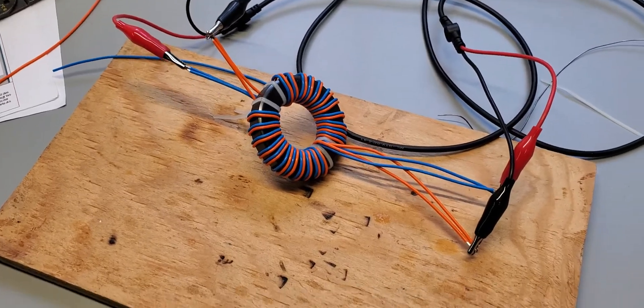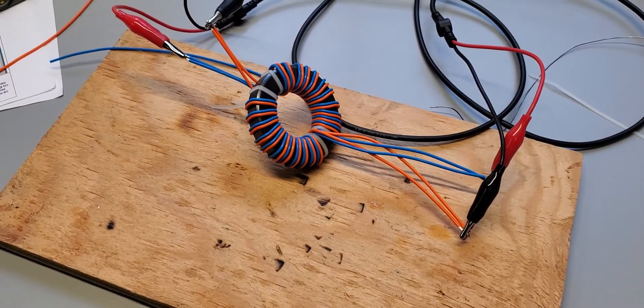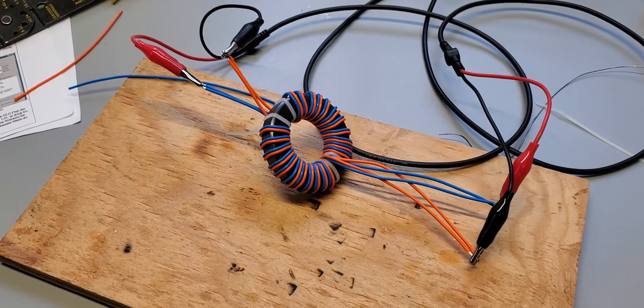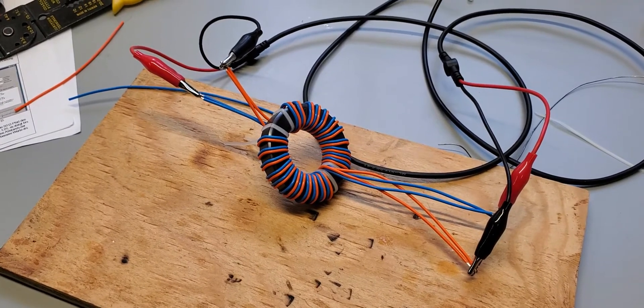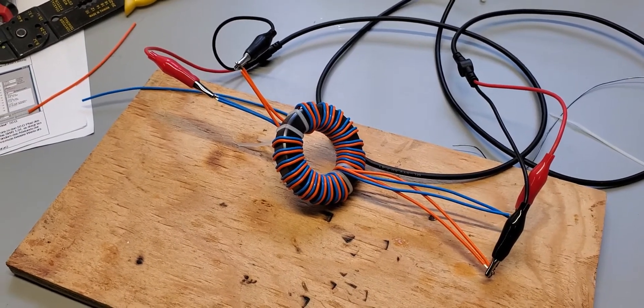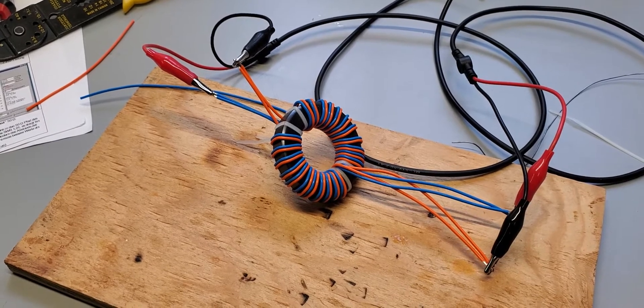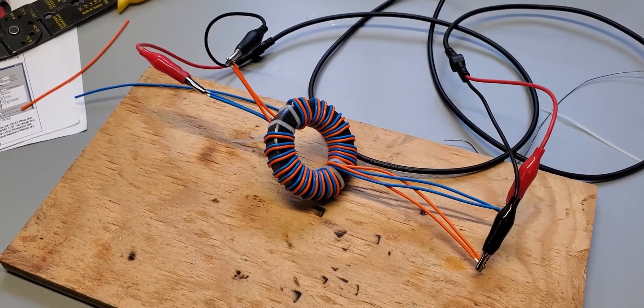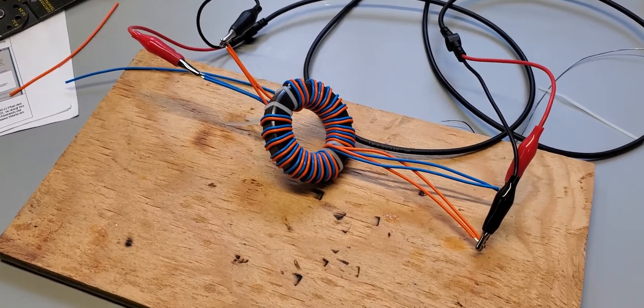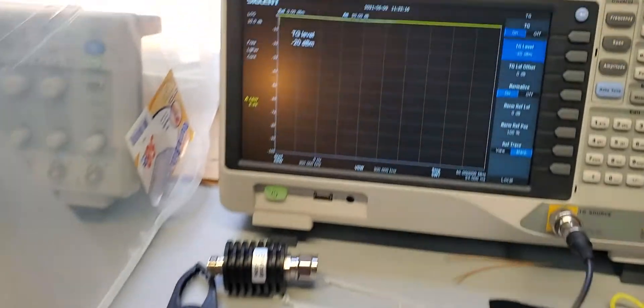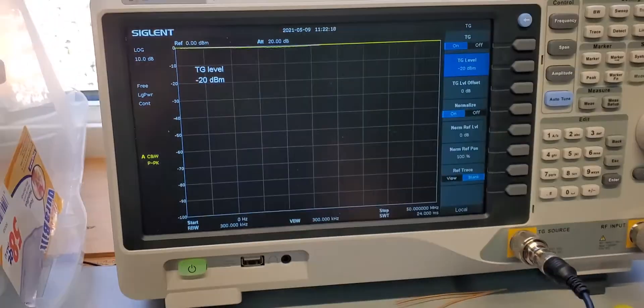Welcome back to my messy lab. I just quickly wound a 43-type mixture toroid again in the one-to-one style, just like the 31 toroids, and I have it hooked up to the spectrum analyzer.